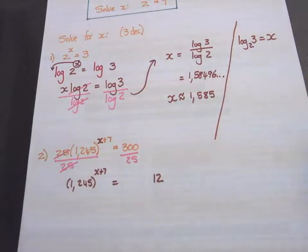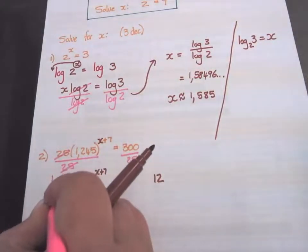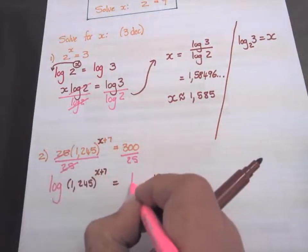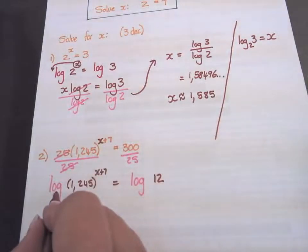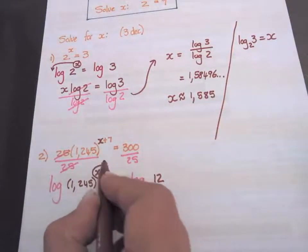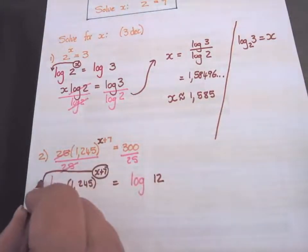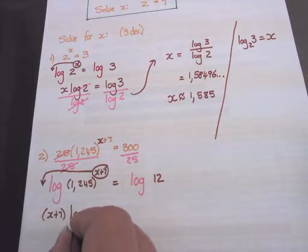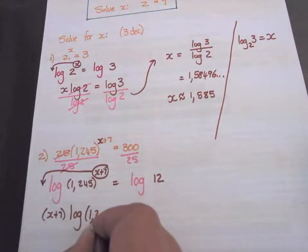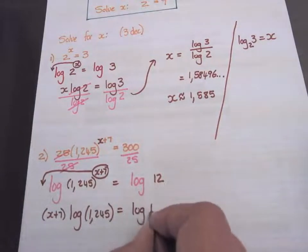Now let's insert our logs. Log of that equals log of that. I have a log with an exponent, so the exponent goes in front of the log. Put it in brackets: (x + 7) log of 1.245 equals log 12.